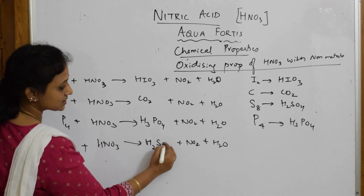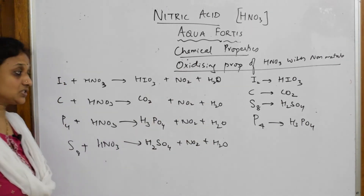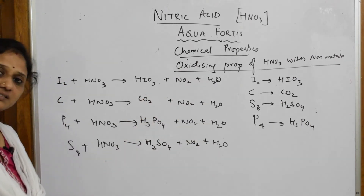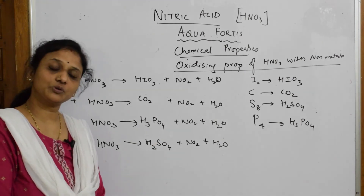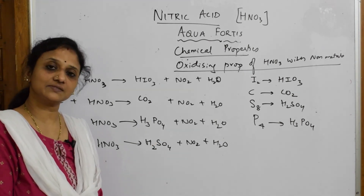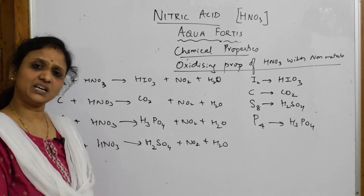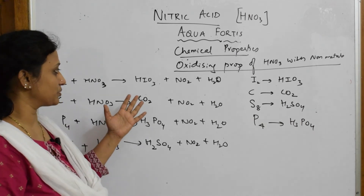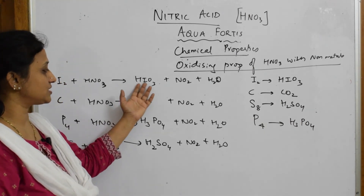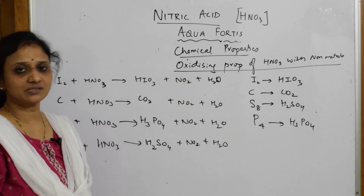The specific products are: iodine to iodic acid (HIO₃), carbon to carbon dioxide, phosphorus to phosphoric acid, and sulfur to sulfuric acid. You just need to balance each reaction. This is the oxidizing property of nitric acid with non-metals — for any other non-metal, the procedure is the same and the byproducts would also be the same.